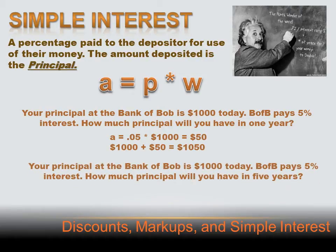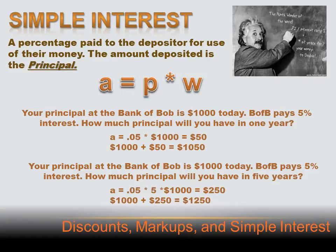Let's look at a different problem. Same setup — you deposit $1,000, B of B pays 5% interest — but you keep it in there for five years, not one year. You earn $50 per year, so you'd expect $50 for the second year, another $50 for the third, and so forth. The total interest would be 5% per year times five years times the principal of $1,000, and when you multiply that out you get $250. You get to keep the $250 plus your original $1,000 principal, for a total of $1,250 in your account.